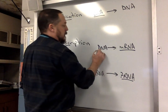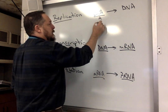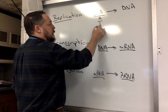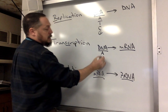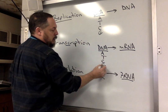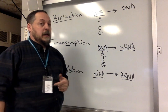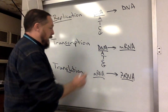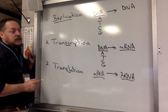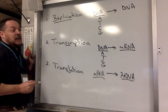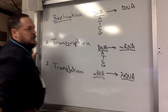DNA has the letters A, T, C, and G in it — these are called nucleotides. RNA does not have T; RNA has U instead. The A stands for adenine, T stands for thymine, C stands for cytosine, and G stands for guanine.